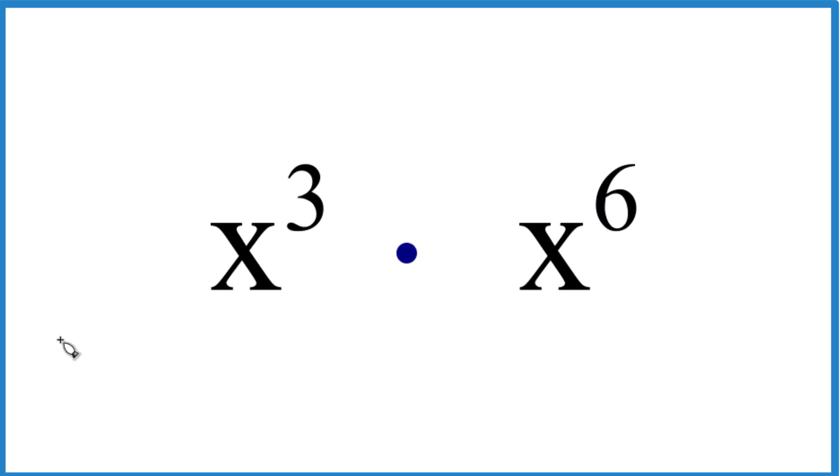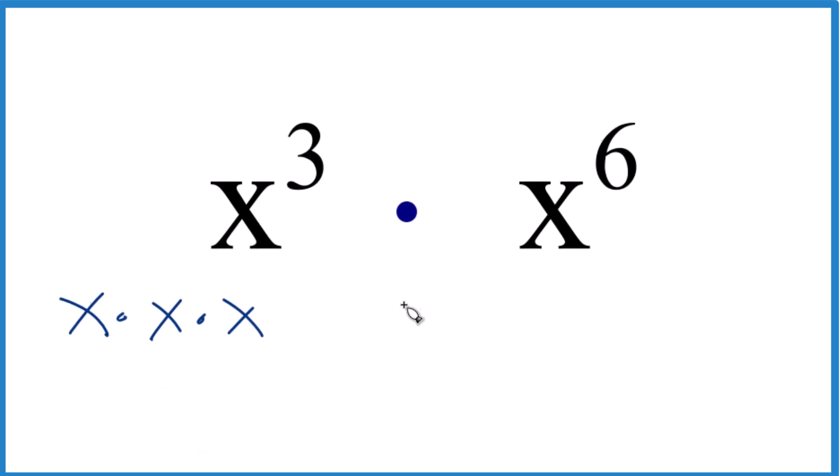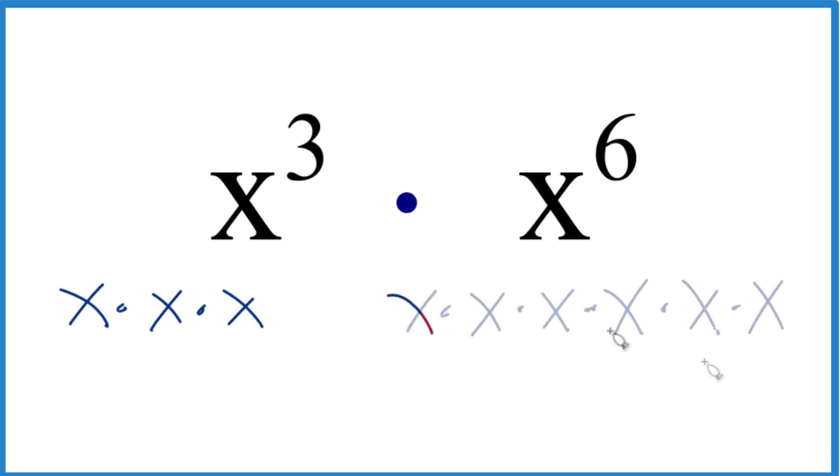First, x to the third, that's just x times x times x. And then x to the sixth, that would be six x's, like this. So we have x to the third, x to the sixth, we multiply them together.